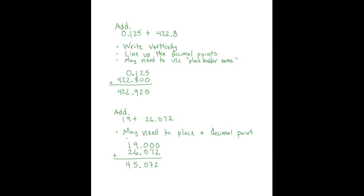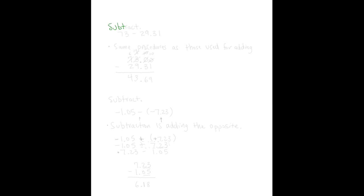Now let's try subtraction. The instructions for this problem say subtract, and we're given 73 minus 29.31. Once again, this problem is written horizontally, but we will actually complete the subtraction vertically. We'll use the same procedures as before.